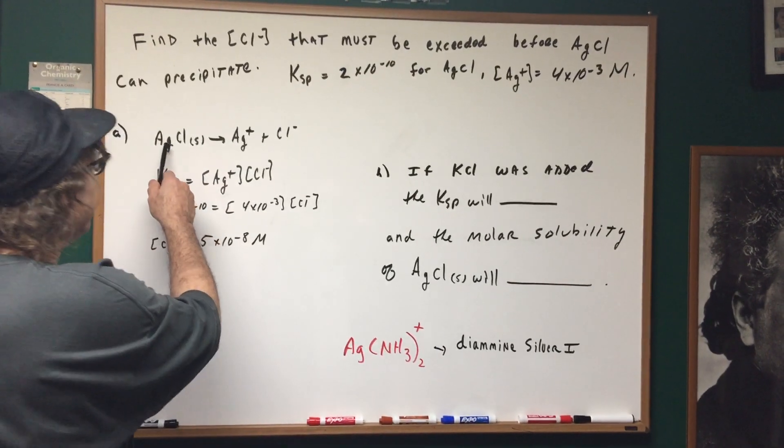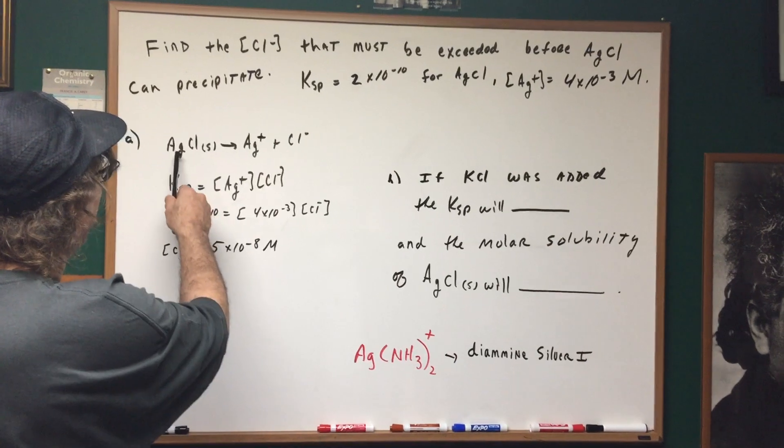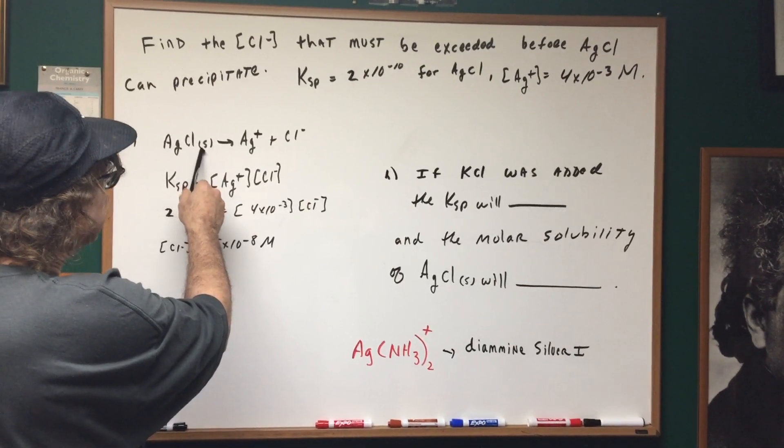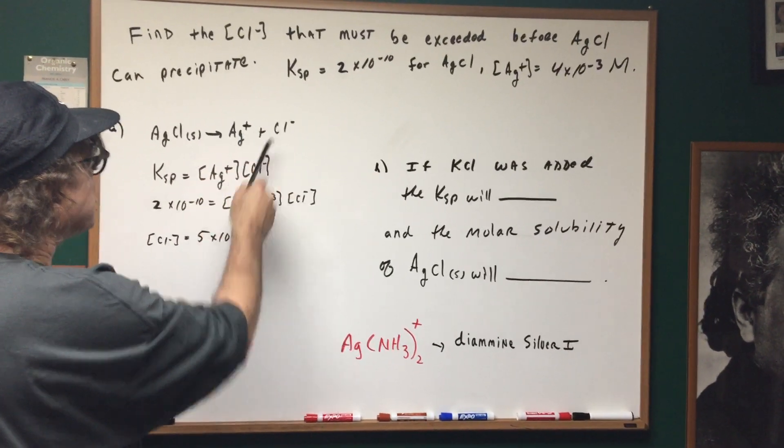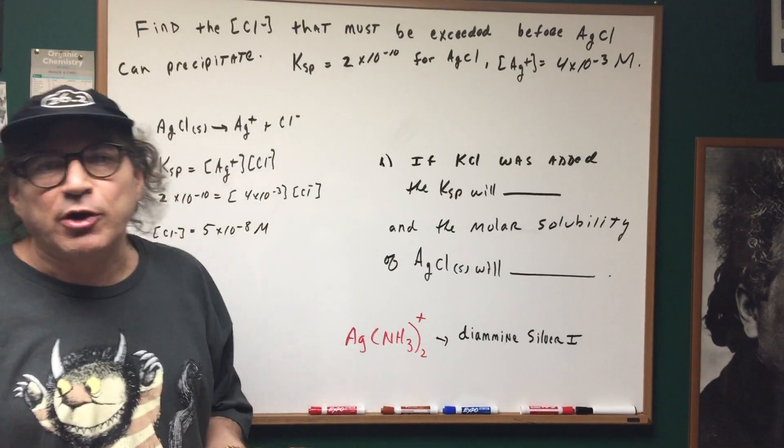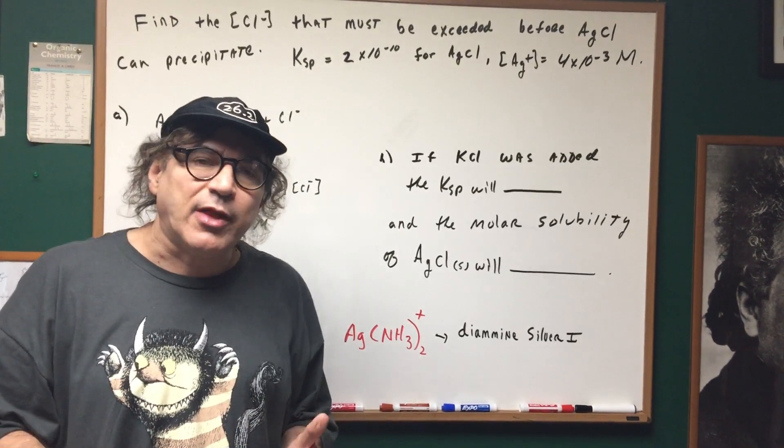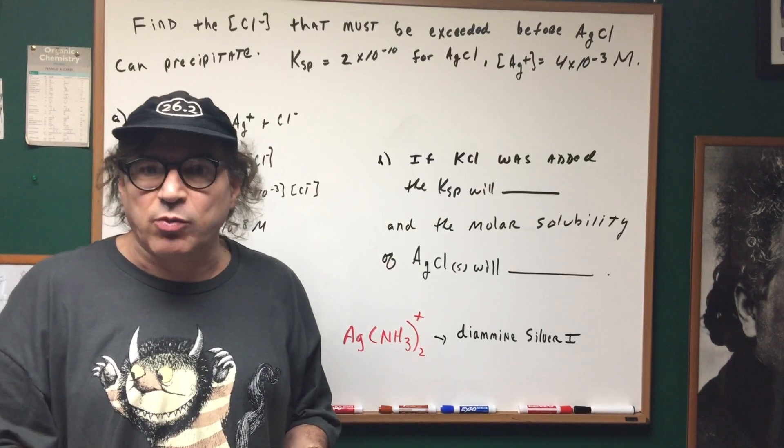First thing you do is we write the reaction for silver chloride. Silver chloride solid breaks down into silver plus chloride. Even though silver chloride is insoluble, nevertheless a little bit of it still would break up.